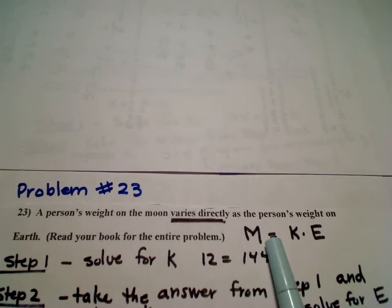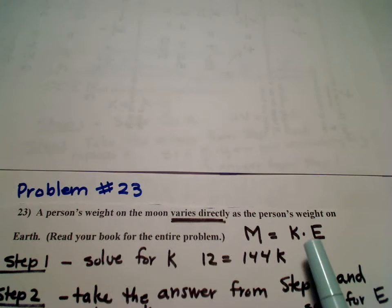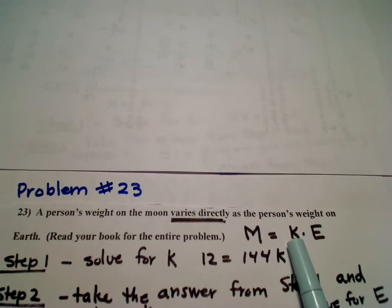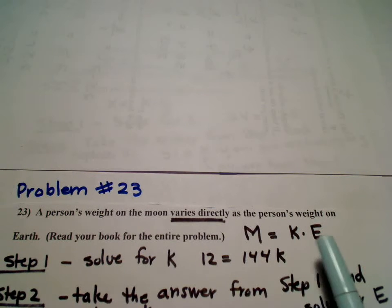But notice, there's varies, there's my equal. And because it says directly, I know I'm going to multiply the constant times the earth. So, moon is equal to the constant k times e for earth.